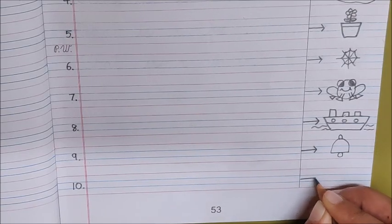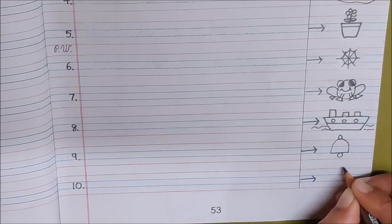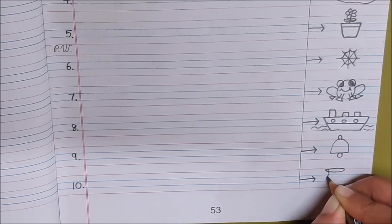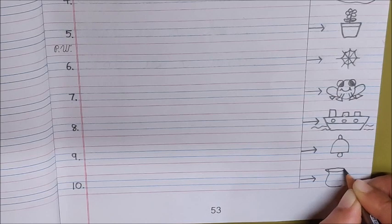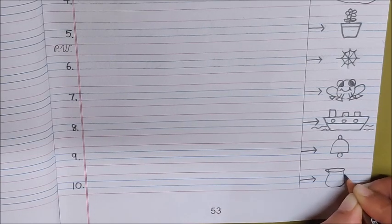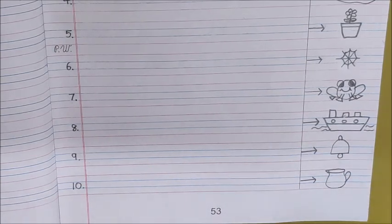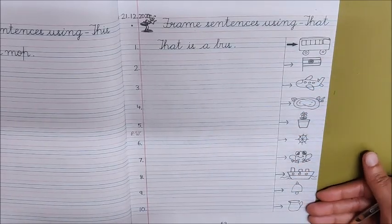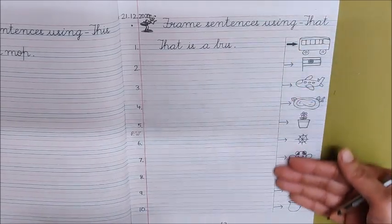Last picture. Again make an arrow. And here we are making a jug. Now children we have drawn all the pictures. We have made arrows also.